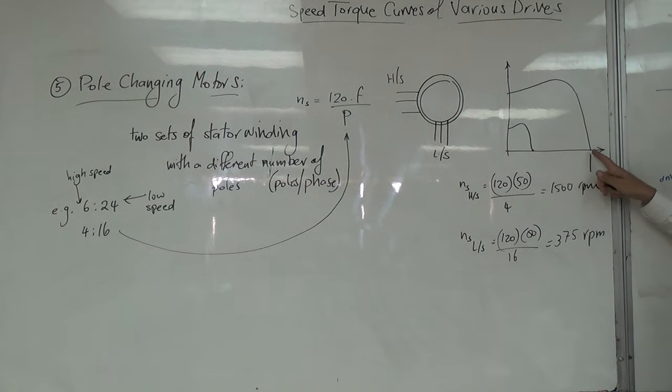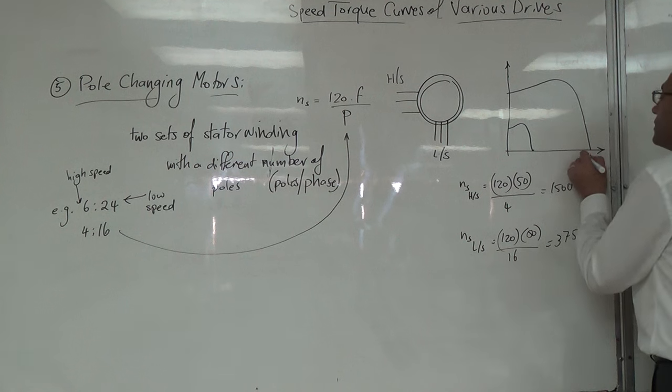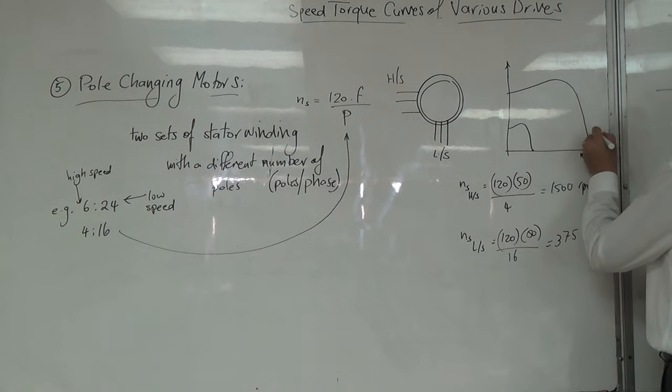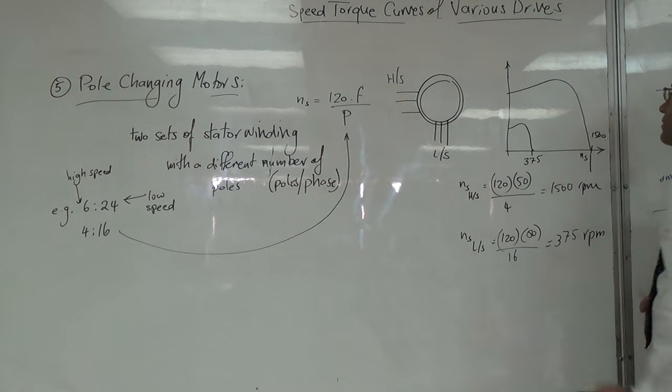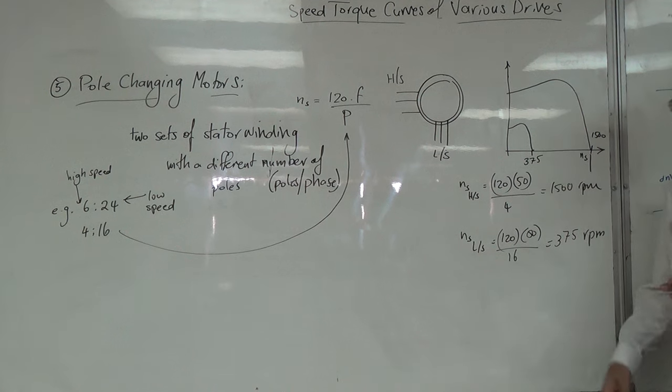الاختلاف بالـ poles سبب الاختلاف بالـ synchronous speed. فعندي هون ns sync هذه 1500 RPM، وهون ns sync 375 RPM. فنزلنا من هاي النقطة لهاي النقطة، ربع القيمة الأصلية.